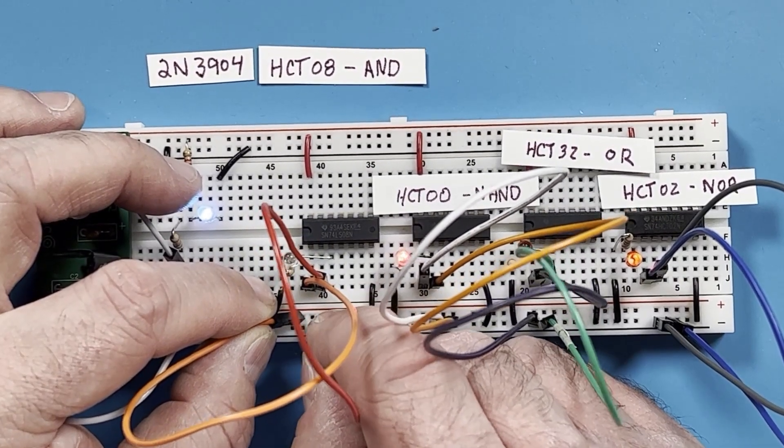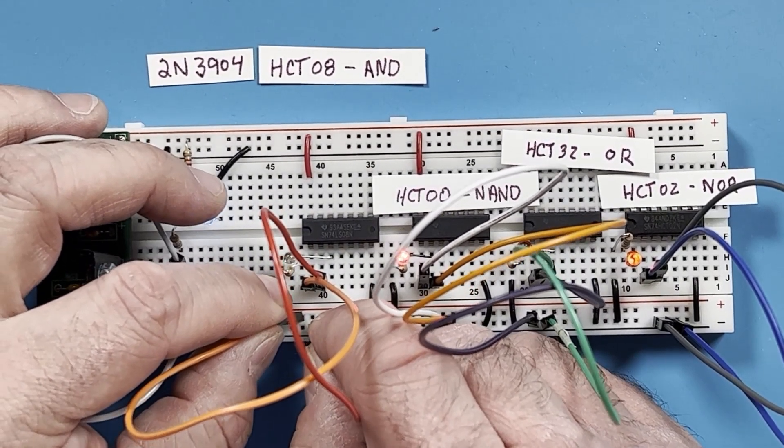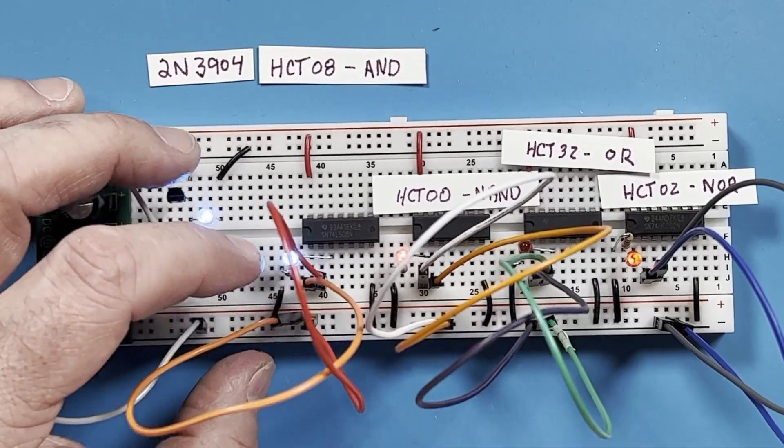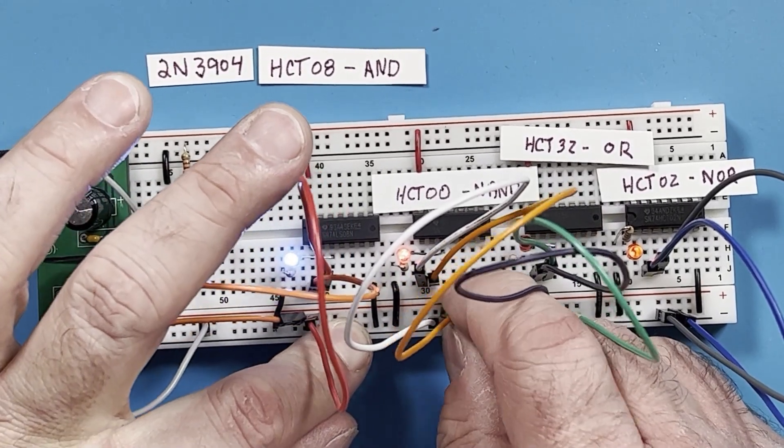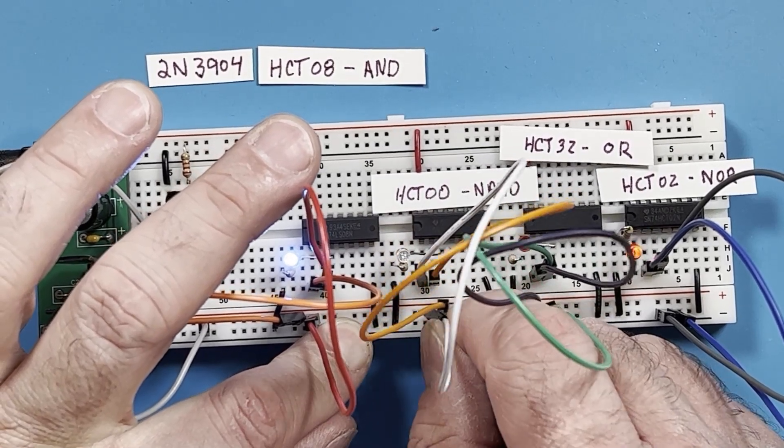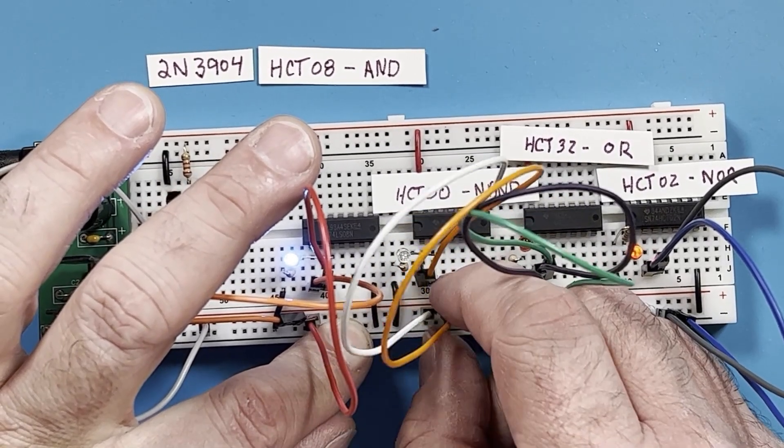Any other configuration and the output is low. Well with the NAND gate, the only time the output is low is if both inputs are high. Otherwise the output is going to be high. As you can see here, it is exactly the opposite of what the AND gate is doing.